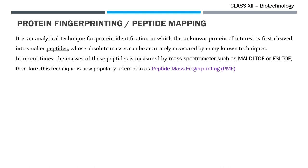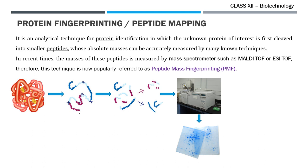Protein fingerprinting is an analytical technique for protein identification in which the unknown protein of interest is first cleaved into smaller peptides whose absolute masses can be accurately measured by many known techniques. Nowadays, the most commonly used technique is mass spectrometry, especially the MALDI-TOF. Therefore, its name has now become popularly known as peptide mass fingerprinting.